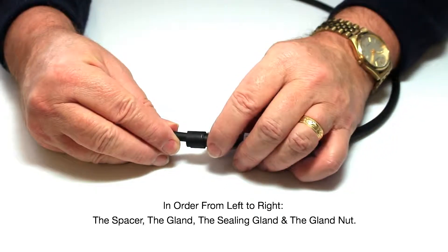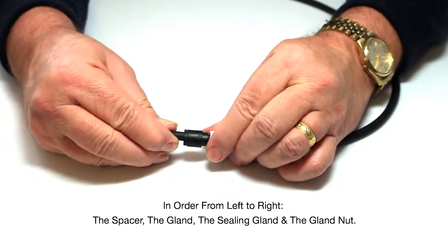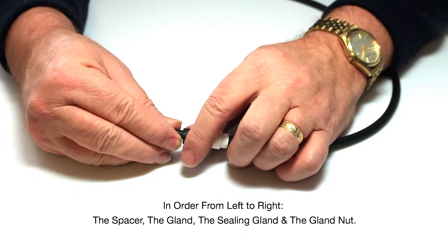In order from left to right: the spacer, the gland, the sealing gland, and the gland nut.